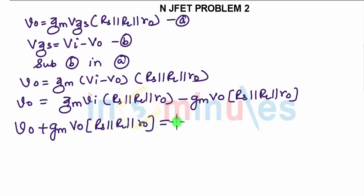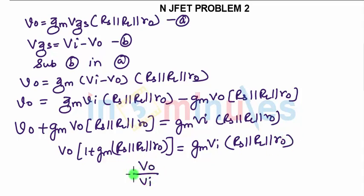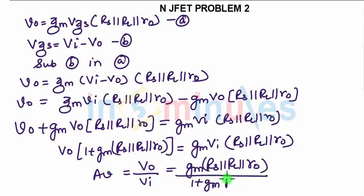This is VO, so taking this term on the other side: VO plus GM*VO*(RS parallel RL parallel RO) equals GM*VI*(RS parallel RL parallel RO). If you take VO common, you will get VO*(1 plus GM*(RS parallel RL parallel RO)) equals GM*VI*(RS parallel RL parallel RO). So you will get VO/VI, which is your voltage gain, as GM*(RS parallel RL parallel RO) upon 1 plus GM*(RS parallel RL parallel RO).